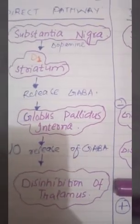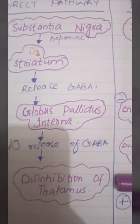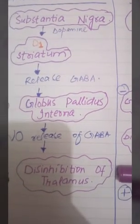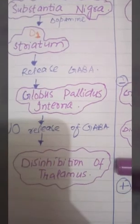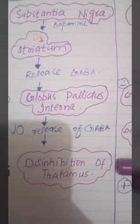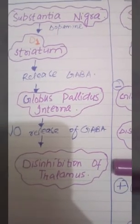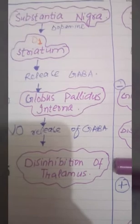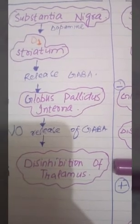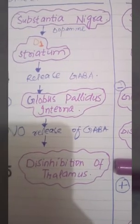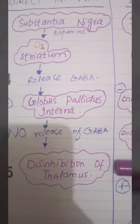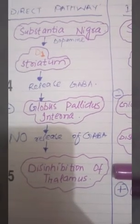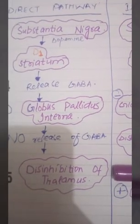Since the Globus pallidus interna is inhibited, there will be no release of GABA and there will be no one to inhibit the thalamus. So there will be no inhibition of the thalamus, and the thalamus will be sending impulses. That means the thalamus is excited and working because no one inhibited it.